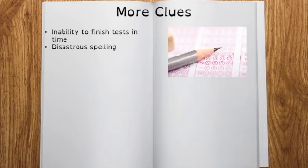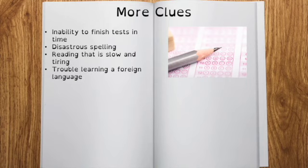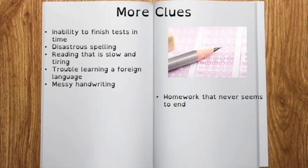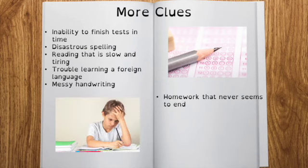Disastrous spelling. Some dyslexics can't even get close enough for spell check to help them. Reading that's slow and tiring. If they have trouble learning a foreign language. If their handwriting is super messy. If you have homework that never seems to end, that should be a clue for you too. It was in our case for sure.